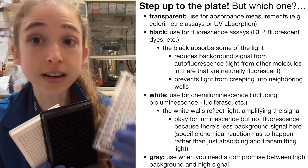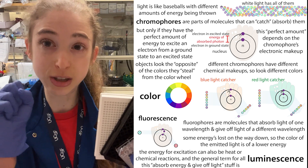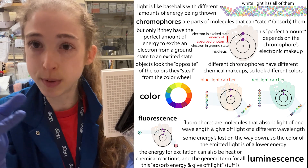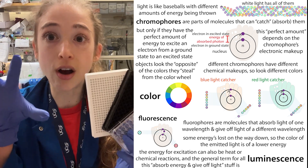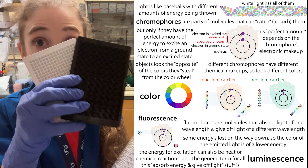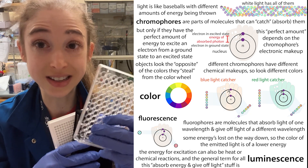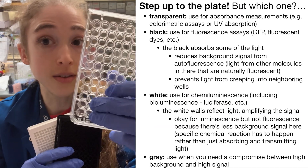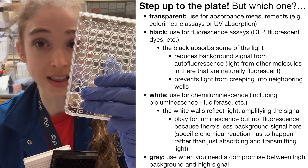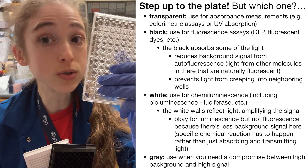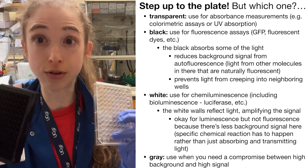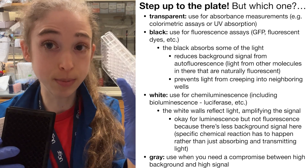But why? In an absorbance measurement, you're shining light and measuring what the molecules steal — so what they absorb. But in fluorescence or luminescence assays, the molecules are giving off light. So in absorbance, they're stealing light; in fluorescence/luminescence, they're giving off light, and you're measuring either that emitted light or the light that gets through that doesn't get stolen. In the case of light not getting stolen, you just want to make sure the molecules have access to the light, so you want something transparent. The molecules aren't giving off light, so you don't need to worry about them shining into other wells — no crosstalk — so you can have these transparent walls.